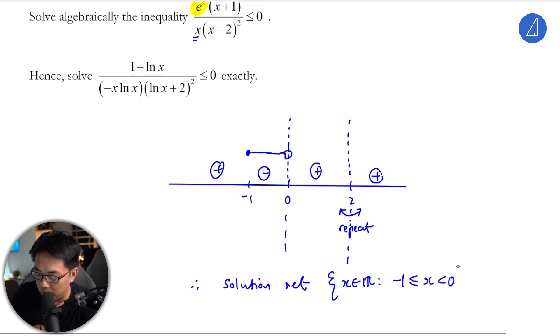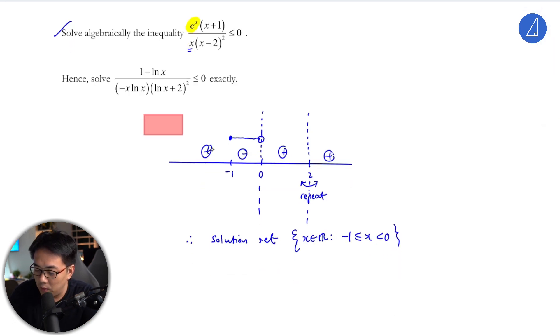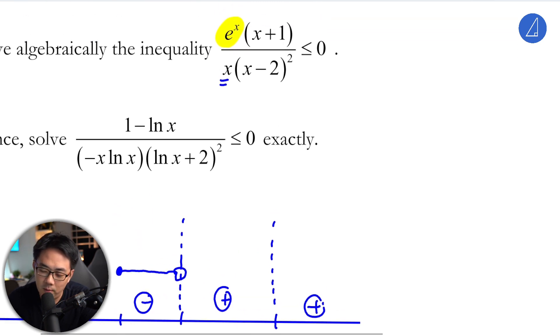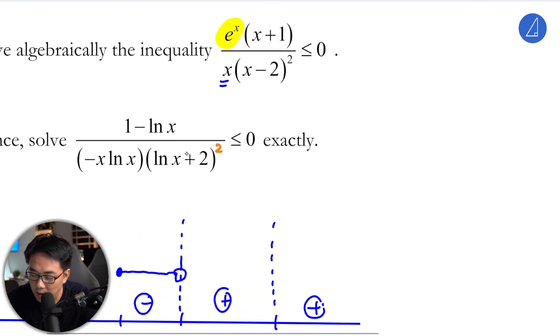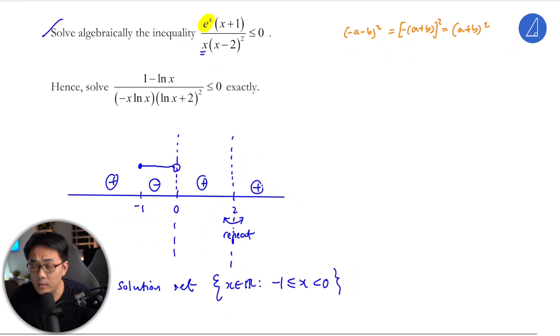Now for the hence part, solve this inequality exactly. What you need to know is how to convert this expression. The key thing is look at the square here - there's a plus two and a negative two. I can get it to be negative two. Remember that (−a − b)² equals (a + b)² because when we square the negative, it becomes positive.